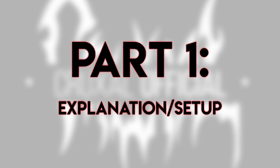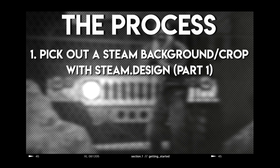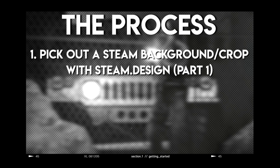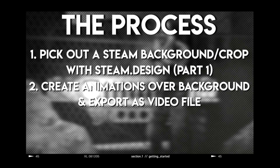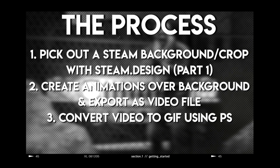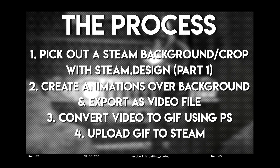Part one is explanation and setup before you even jump into this. When making an animation for your profile, there are a few key things you need to know. You must first pick out a Steam background and get a cropped image using steam.design, which I go over in my previous installments. Then you create animations on top of that image and save it as a video file, import that into Photoshop, and export it as an optimized GIF. That GIF is then uploaded to your Steam Profile and you have an animated artwork showcase.